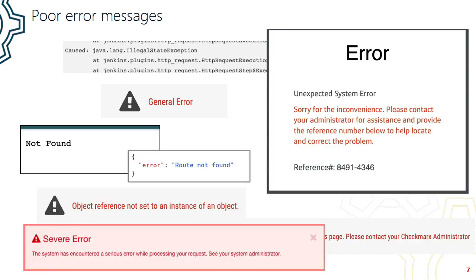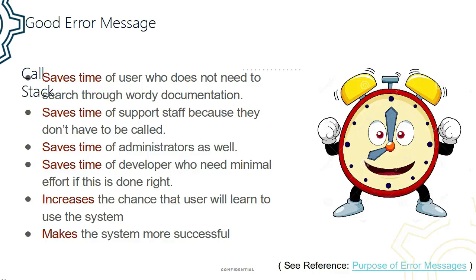Here's a collection of poor error messages I've seen in the past. These messages are poor because they do not explain what you did wrong, and they do not help you find a better solution. A good error message, on the other hand, saves the time of the user who doesn't need to search through documentation. It saves the time of the support staff, the administrators, the developers. It also increases the chance that the user will learn to use the system, and it makes the system more successful overall.